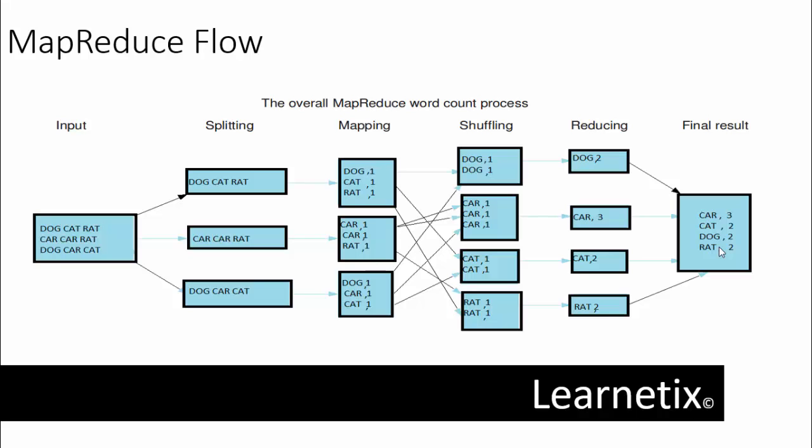Once the worker node completes processing the subproblem, it returns back to the master node. In the reduce procedure, all the worker nodes return the answer to the subproblem assigned to them to the master node. The master node collects the answers and aggregates them in the form of the answer to the original big problem which was assigned to the master node.